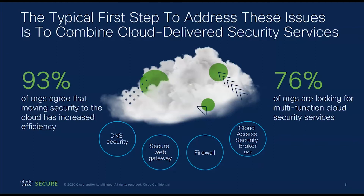Another survey found that 76% of customers want multiple capabilities in a single cloud service, according to ESG research. Some of the capabilities you would look for in a SASE vendor include DNS security, secure web gateway — also known as web proxy — firewall services, and cloud access security broker, or CASB. We need to think about not only protecting access to the internet and cloud, but also protecting cloud infrastructure itself — so as users are moving, sharing, and downloading data, we have visibility and can protect users as they're manipulating data within those applications.